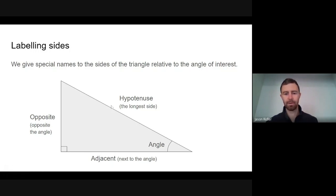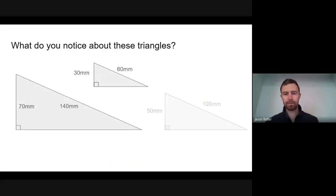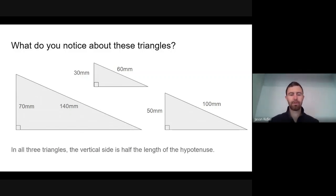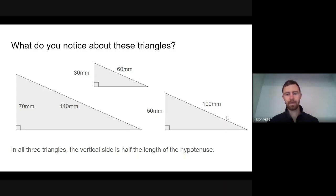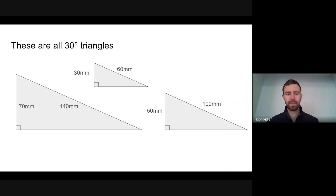So we've got opposite, adjacent, and hypotenuse — we're going to need to understand those terms later on. Here's a question: what do you notice about these triangles? Look at the side lengths. You should notice that in all three triangles the vertical side is exactly half the length of the hypotenuse. The reason is that all of these triangles have the same shape — they're all 30-degree triangles, so all of them would have a 30-degree angle in that position.